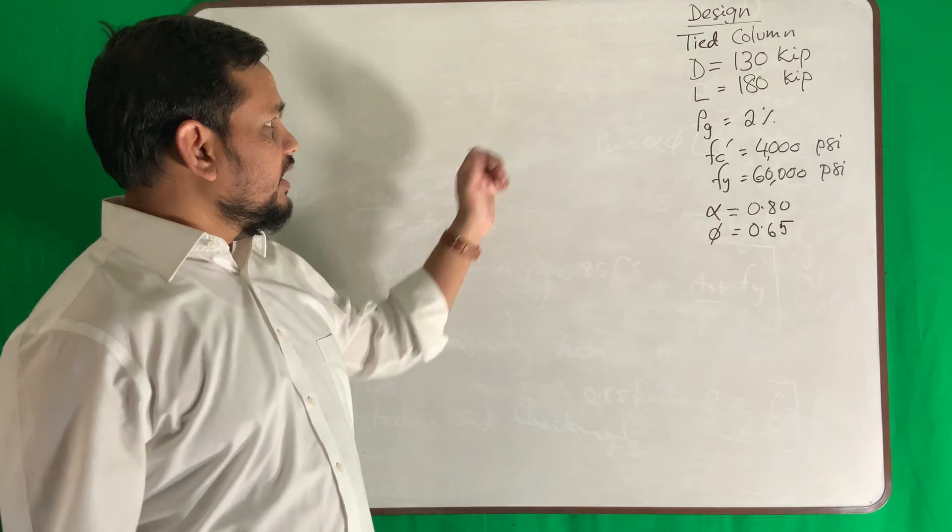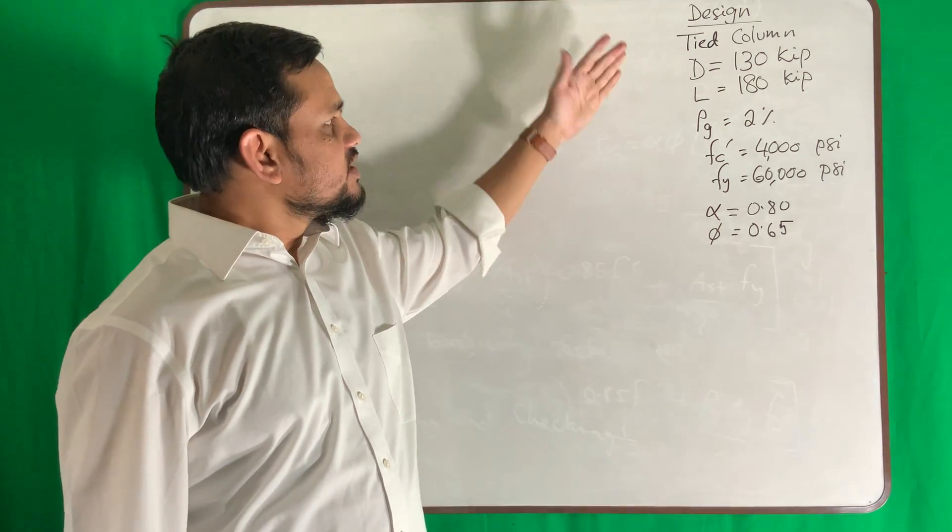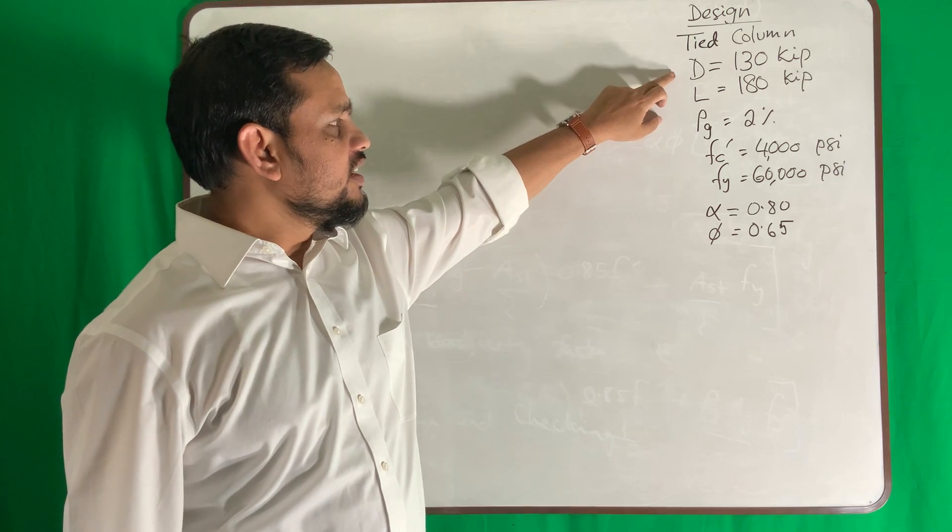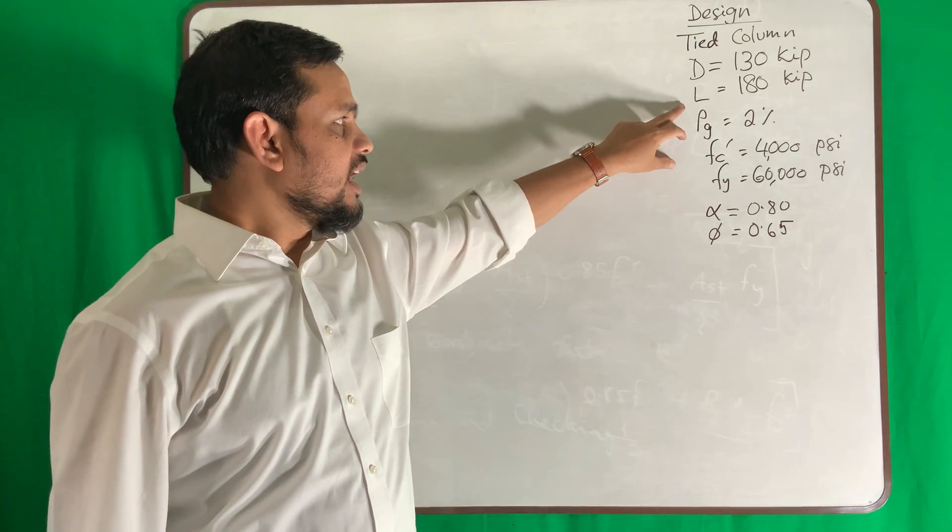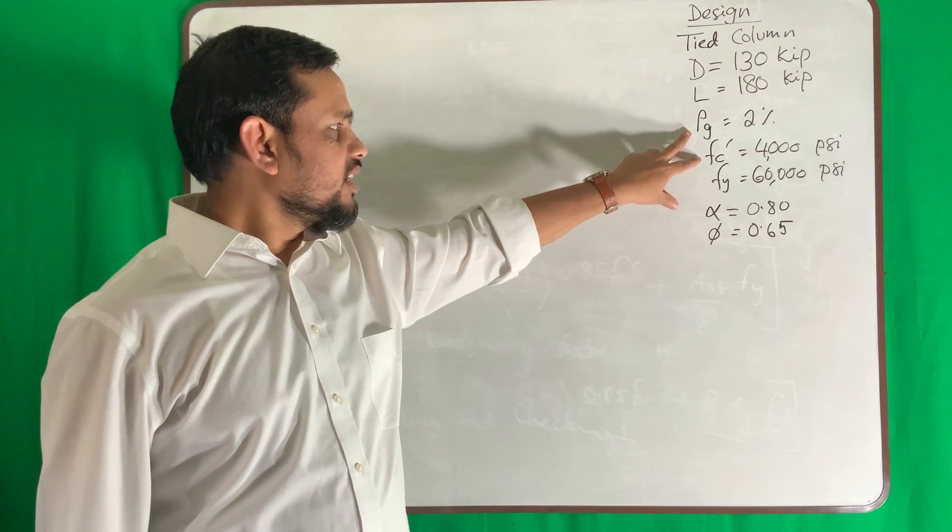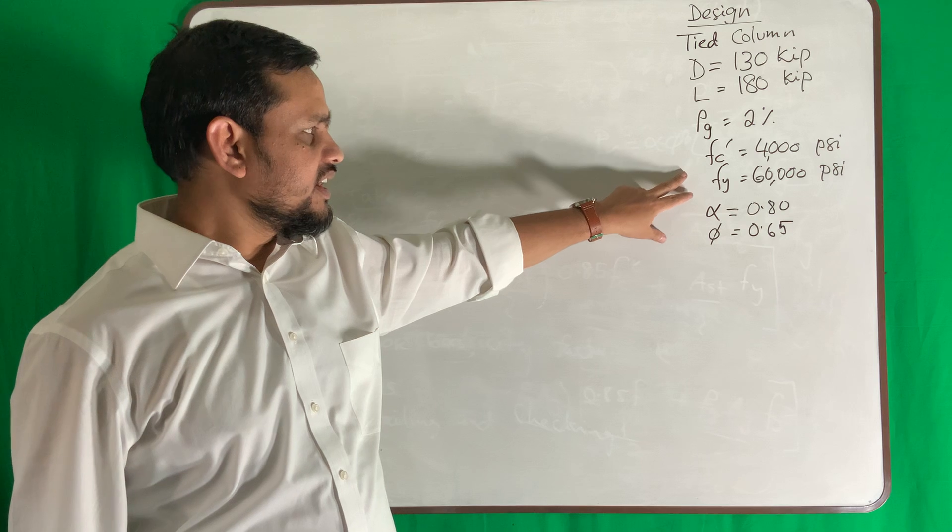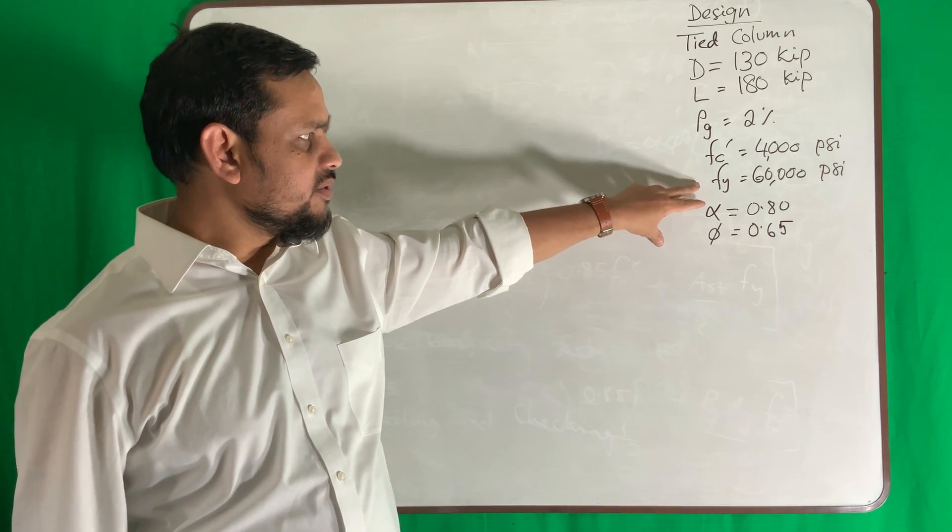This time I will show an example of a tied column design. These are my given data: dead load 130 kip, live load 180 kip, assume initially gross reinforcement area 2%, f'c 4000 psi, fy 60,000 psi.